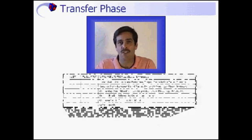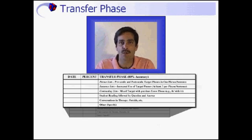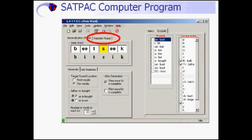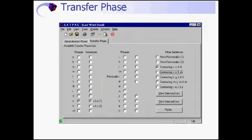Some students after the generalization phase are using their target sound beautifully and are done with the program. Most need practice transferring their successes to more difficult contexts. This is why the transfer phase was developed. To access the transfer phase, select the transfer phase tab on the SATPAC main screen just above the seed word. To get the lists, check the boxes corresponding to the phrases, sentences, and contrasting sentences for the appropriate target sound. The example shown is for the frontal lisp target sound, S.